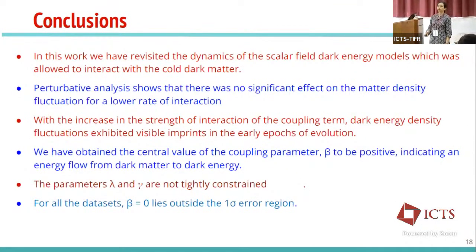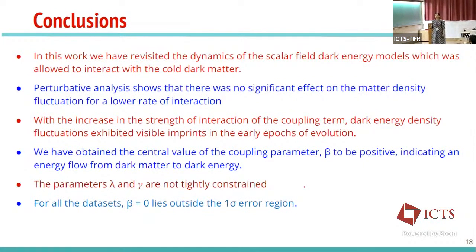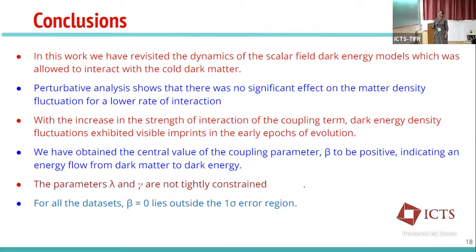In conclusion: considering an interacting dark energy and dark matter model has a significant effect on structure formation. For a lower rate of interaction the effect is smaller, but increasing the interaction rate shows a significant increase in the growth of perturbations. The beta factor comes out to be positive — we allowed negative values of beta as well in the prior, but it converged to positive — indicating that the flow of energy is from dark matter to dark energy.